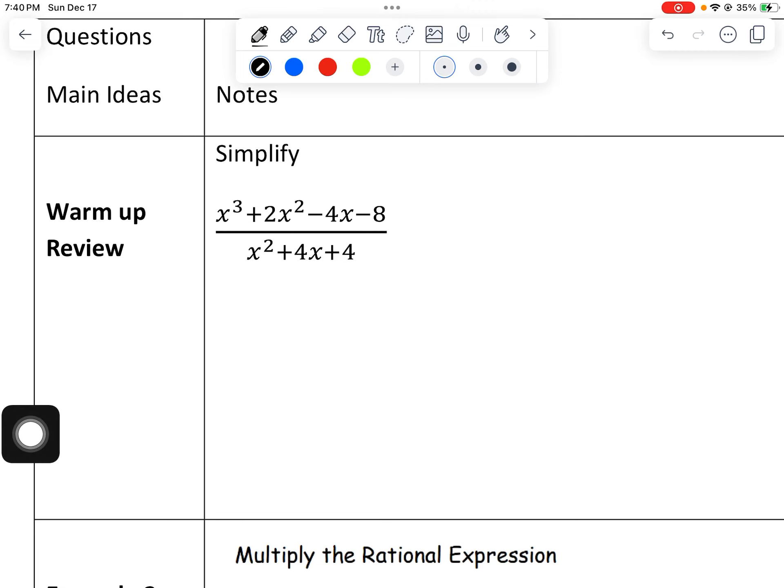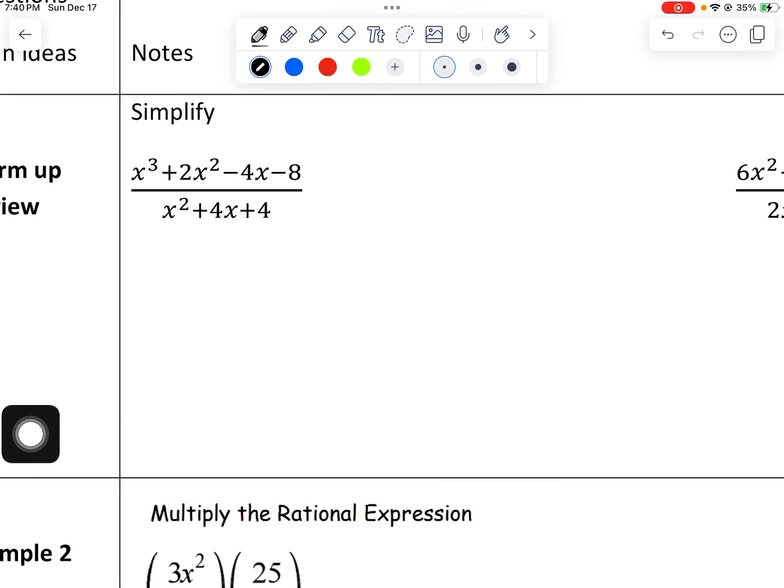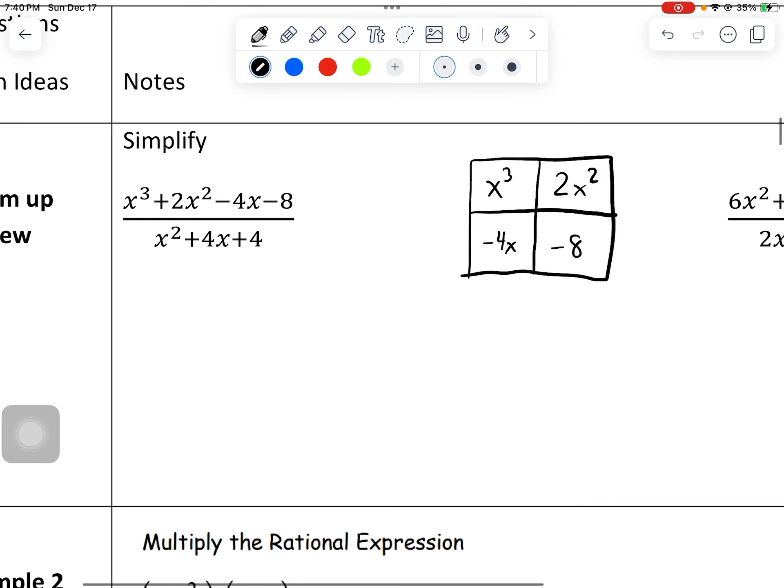Remember, if you see three or four terms, in this case one, two, three, four, and it's a cubic equation, that's probably going to lead to a box method problem. So you just line them up in order. It'd be x cubed, 2x squared, negative 4x, negative 8, and then we do the greatest common factor. So x squared, negative 4x, and then a 2.